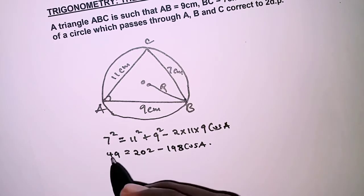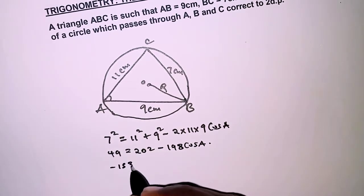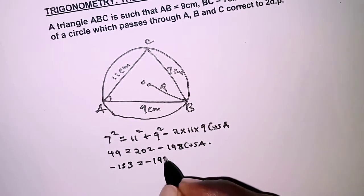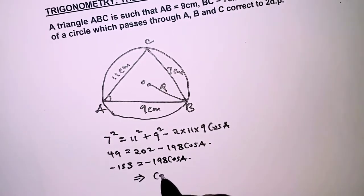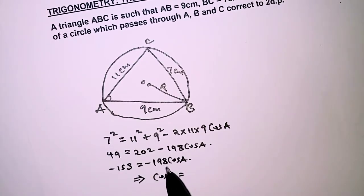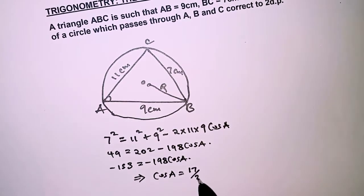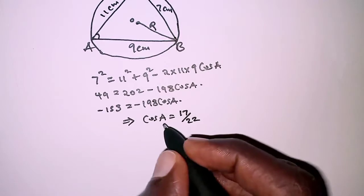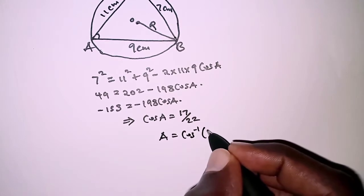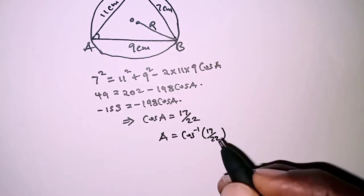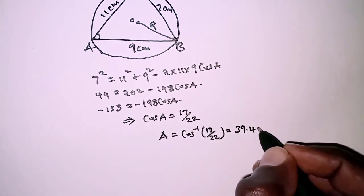Rearranging: 49 minus 202 equals negative 153, which equals negative 198 cosine of A. Dividing both sides by negative 198, cosine of A equals 153/198, which simplifies to 17 over 22. Therefore angle A equals cosine inverse of 17 over 22, which is 39.401 degrees.